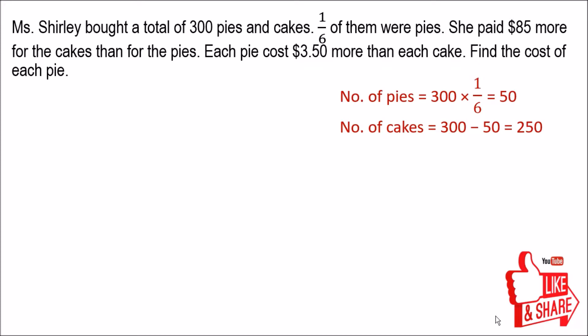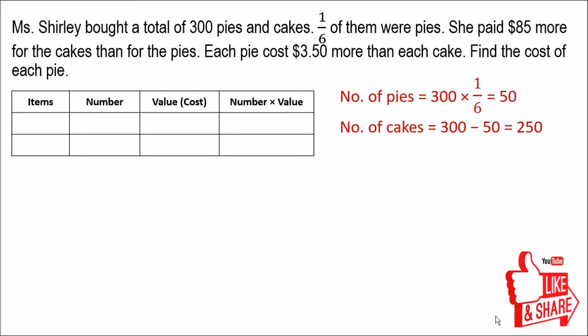Now we know the number of pies and the number of cakes. We're going to apply the number-times-value method. Let's draw the table with columns for items, number, value (the cost of each pie or cake individually), and number times value (the total amount for each item).